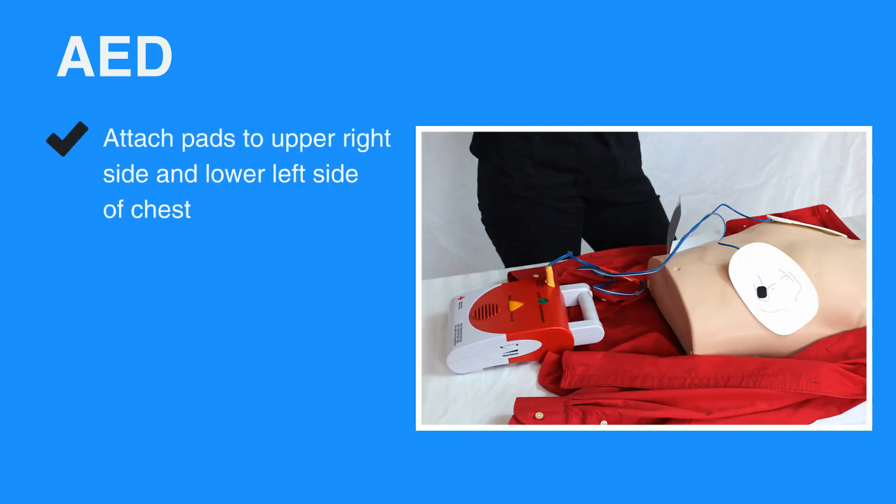Attach the pads to the upper right side and lower left side of the individual's chest. Once the pads are attached correctly, the device will read the heart rhythm. If the pads are not attached correctly, the device will indicate so with prompts.